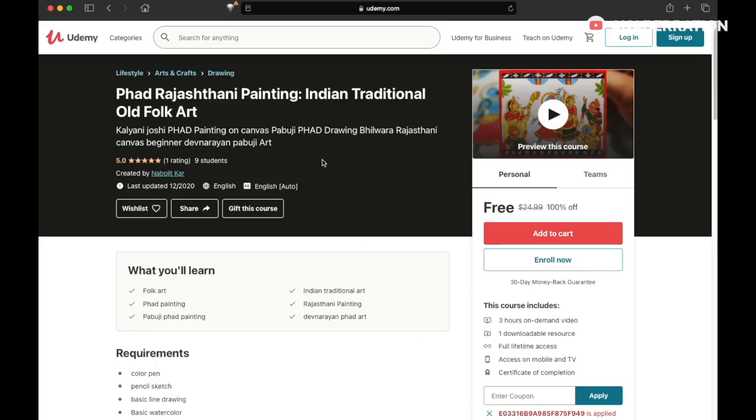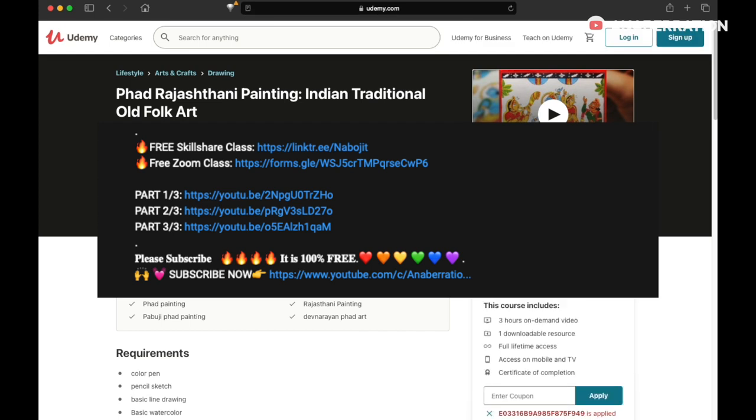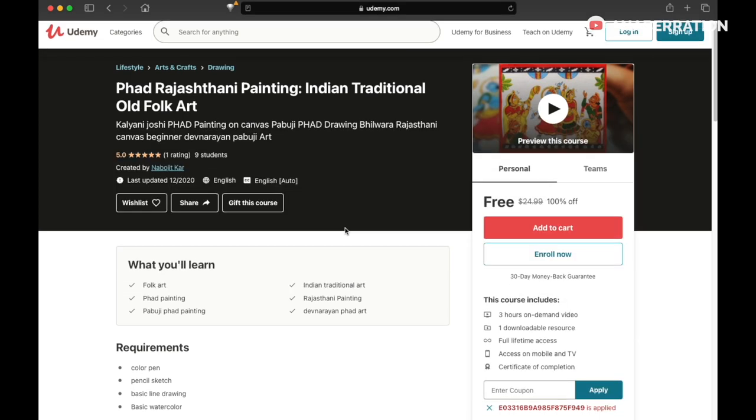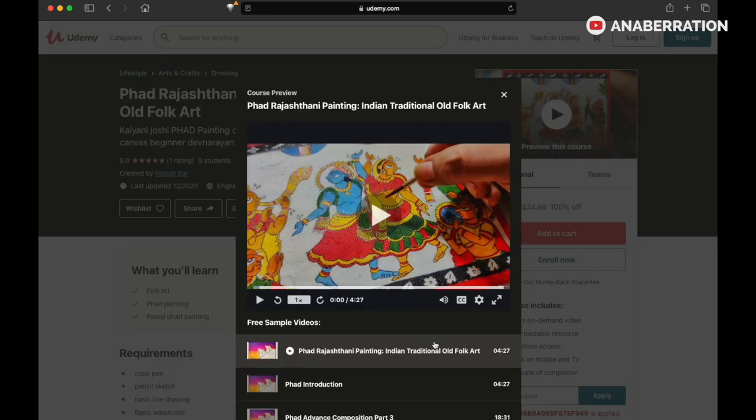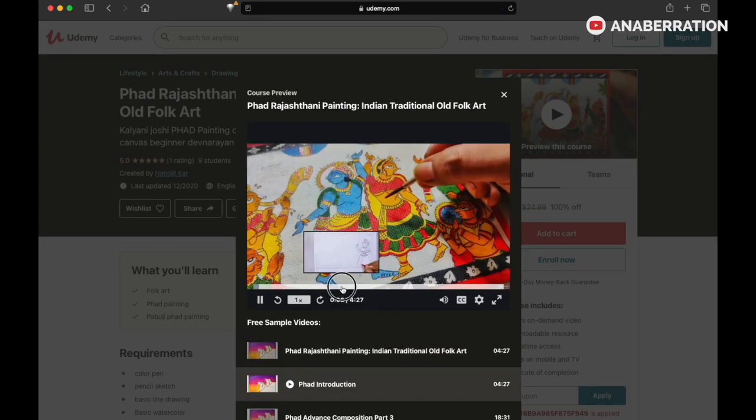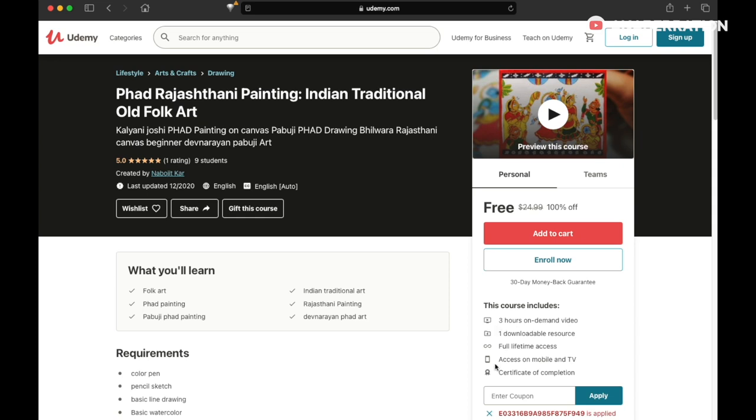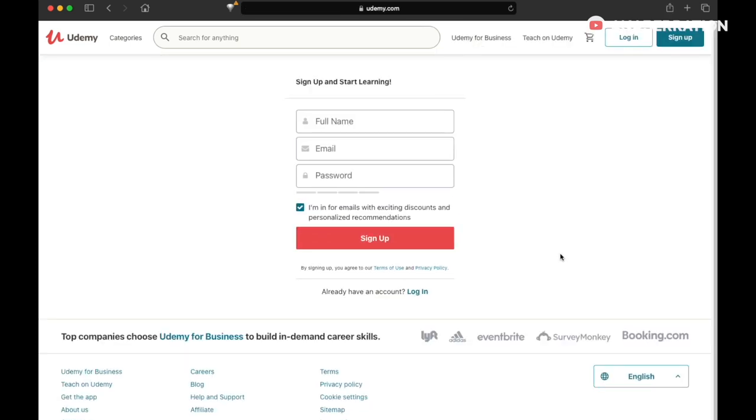To get this free course in free format you just need to go to the link in the description box. After you open the link you can see there is written free and also a coupon is applied. You can preview some of the sample videos and then you can add to cart. After clicking add to cart you can see there is an option for your name, Gmail, and also a password. So you need to sign up with that.